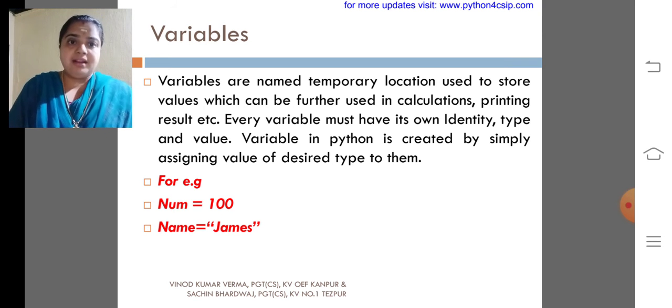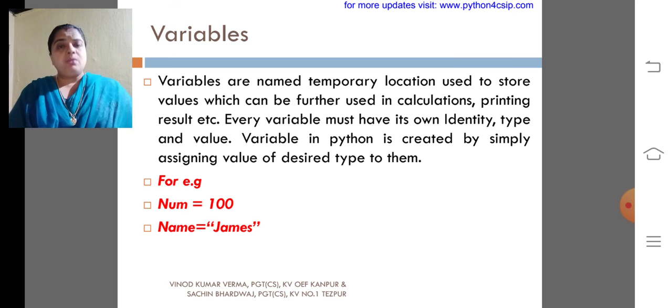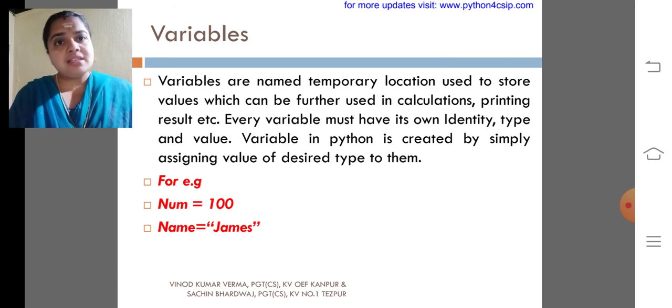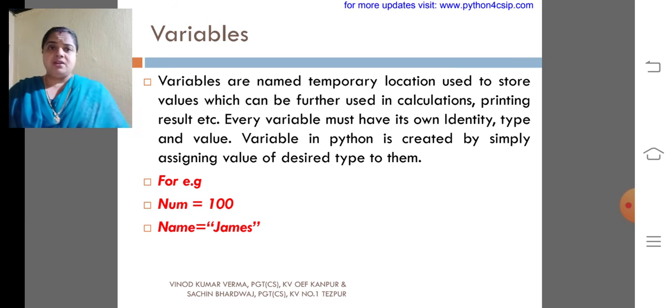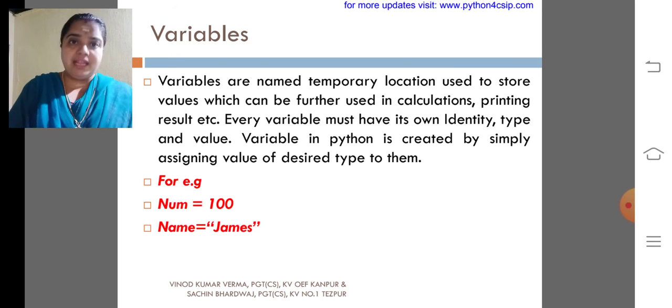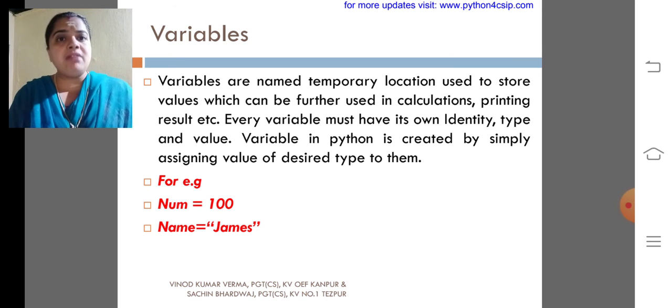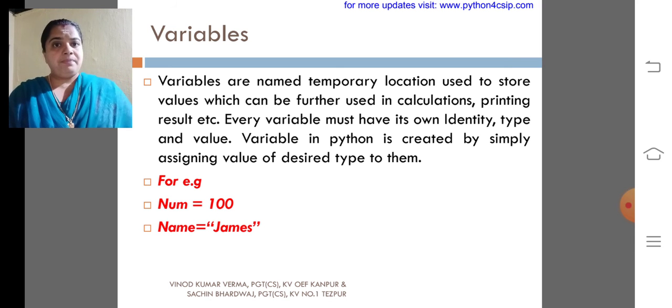The second example: Name equal to James. What is the type of James here? String. So what is the type of name? Again, string. So the type of the variable depends upon the value which we are assigning to the variable. That's all.